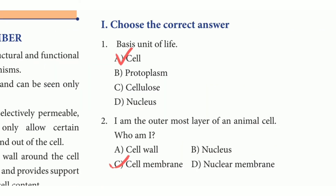Choose the correct answer. First one: basic unit of life. The answer is option A — cell. Second one: I am the outermost layer of an animal cell, who am I? The answer is option C — cell membrane.